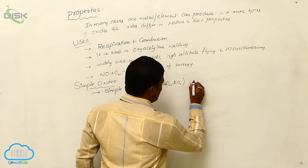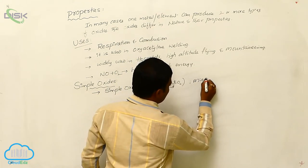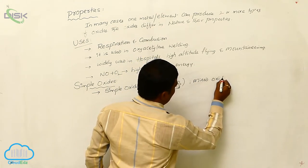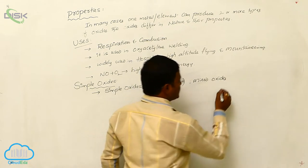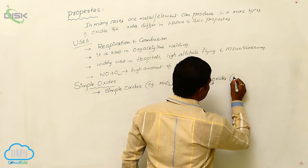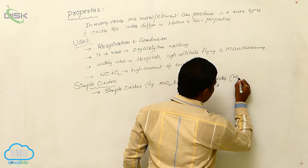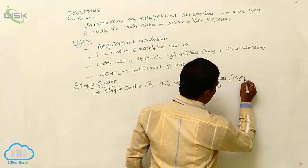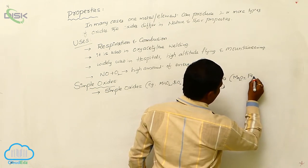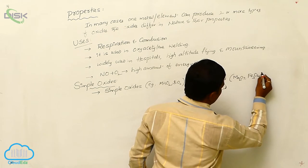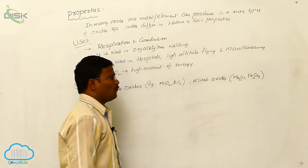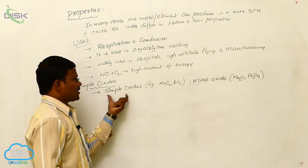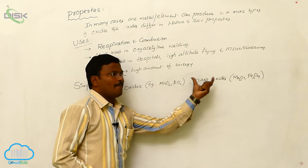And also, one more, mixed oxides. The two types of oxides are simple oxides and mixed oxides. Example for mixed oxides are Mn2O7 or Fe3O4 or Pb3O4, etc.